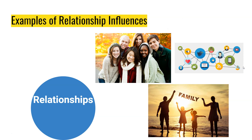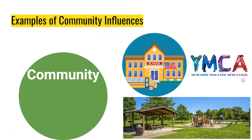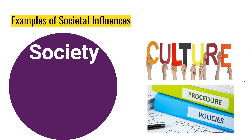Examples of relationship influences are things like our friends, our family, and our social networks. Our community influences are things like our school, the organizations we're a part of within our community, and even the built environment such as our parks and recreation, and the amount of safe outdoor open areas that we can be physically active in. Examples of societal influences are things like our own culture, and the procedures and policies set within our city, our state, and the world as a whole.